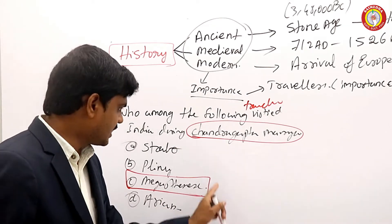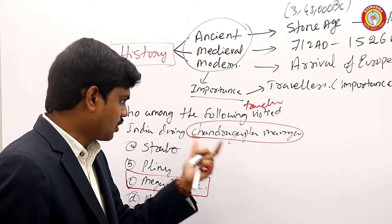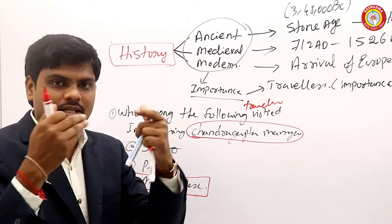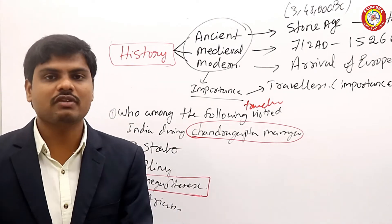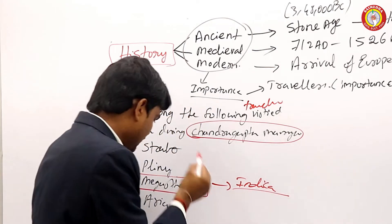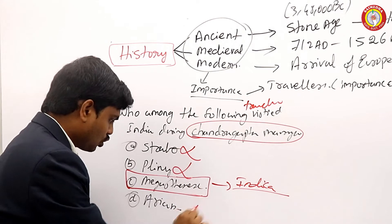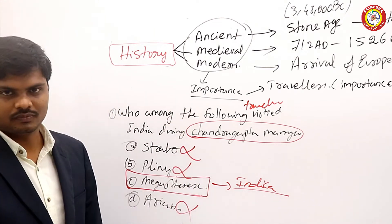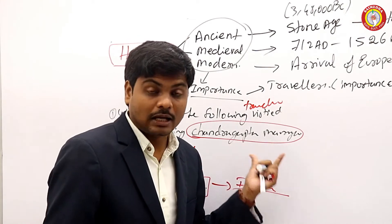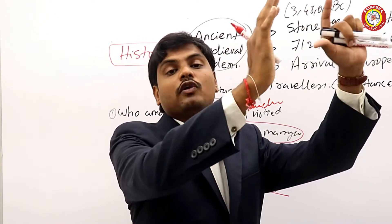Megasthenes visited the court of Chandragupta Maurya and mentioned his observations in his book called 'Indica'. That's the reason he is important. You don't need to know about Strabo, Pliny, or Arrian — you require only Megasthenes. That means you can segregate on the basis of powerful rulers.